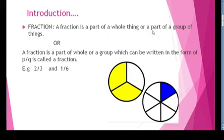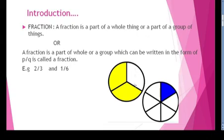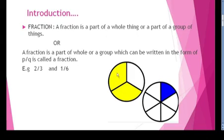For example, I have taken a whole circle and made three parts — one, two, and three. I have shaded two parts. So we write this as 2 by 3. This is a fraction.